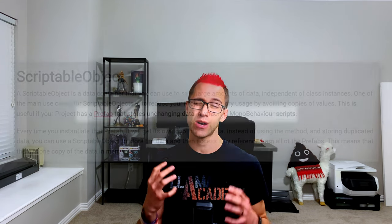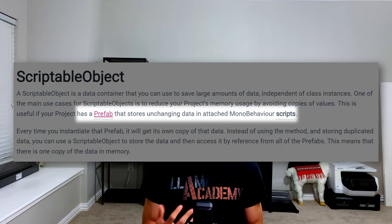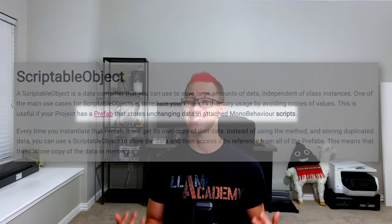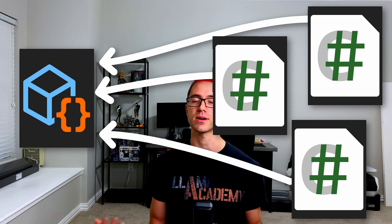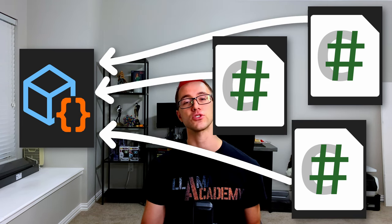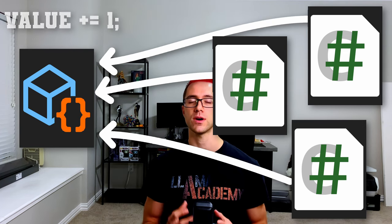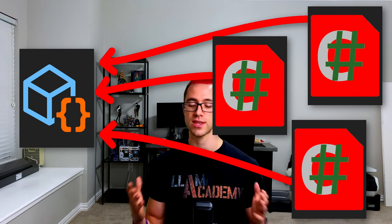The critical thing is that we're trying to house non-changing data, because whenever we use a scriptable object, it's effectively like a static class. There are a few subtle differences: with a scriptable object, we have an instance of it — remember, static classes we cannot create instances of — but whenever we're referencing that one scriptable object, we're reusing it across multiple different components, game objects, and scripts. As a result, if we change a value on the one scriptable object, that's going to impact every object that references it.